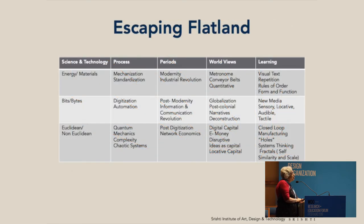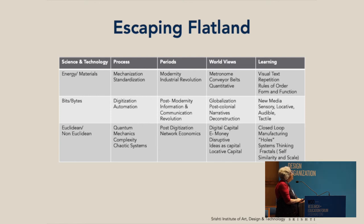When we finished this whole information era — which we are still in, as we are in the industrial era — turbulence came from non-linearity, the return of non-Euclidean thinking, quantum mechanics, understanding complexity and chaotic systems, network economics and post-digitization. We are trying to escape flatland. We entered the world of different kinds of capital: e-money, ideas, locative things that were disruptive. And for the first time, closed-loop manufacturing started coming into the vocabulary of design education.